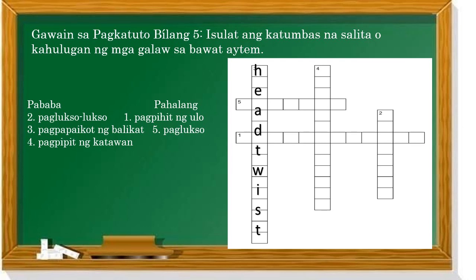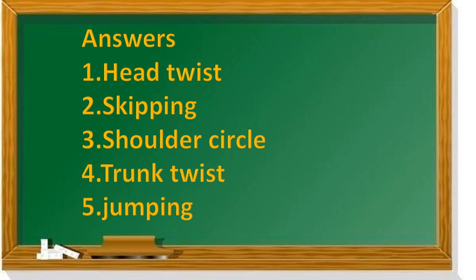Gawain sa pagkatuto bilang lima: isulat ang katumbas na salita o kahulugan ng mga galaw sa bawat item. Halimbawa, pagpapaikot ng balikat — shoulder circle. Hahanapin mo lang ang tamang sagot. Ang mga sagot: number one, head twist; number two, skipping; number three, shoulder circle; number four, trunk twist; number five, jumping.